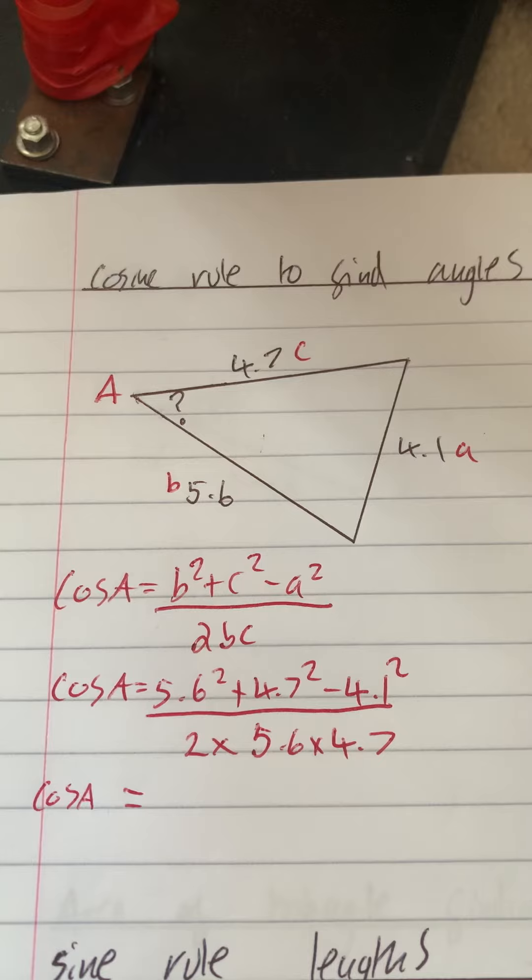Or we could put it in brackets and then divide. We could put it all in one go: 5.6, add 4.7 squared, take 4.1 squared, divided by...